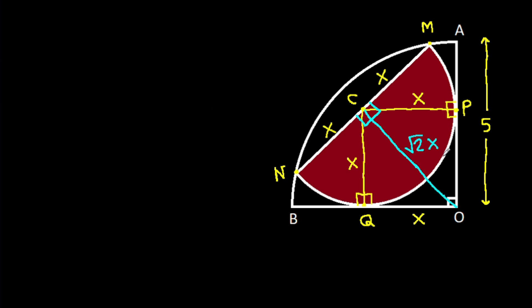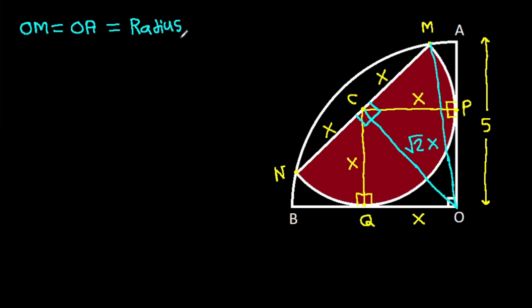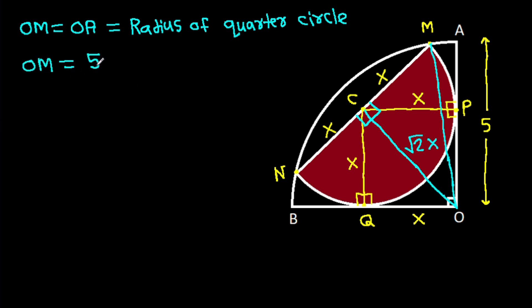If we join OM, then OM = OA, which is the radius of the quarter circle. So OM = 5.